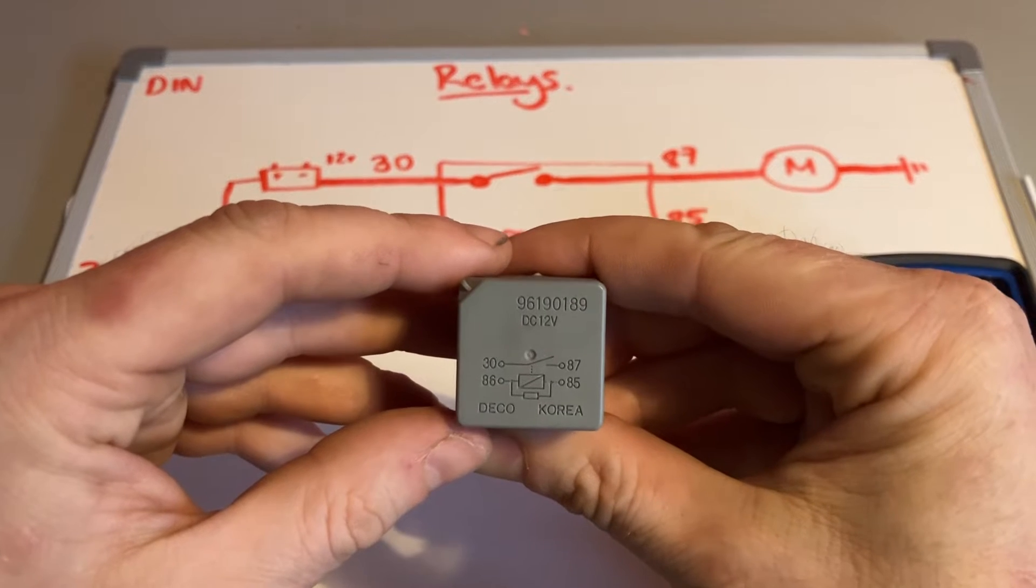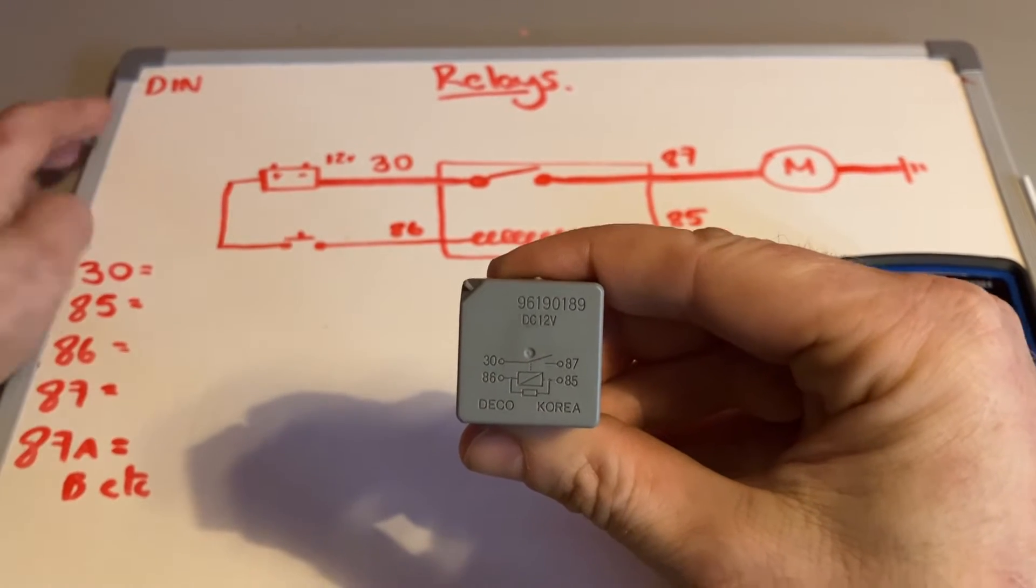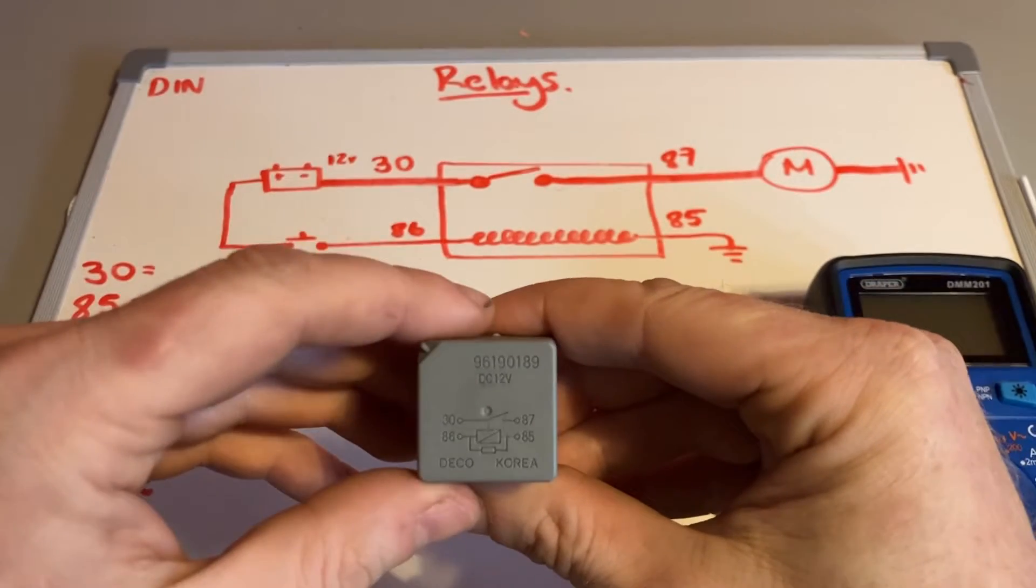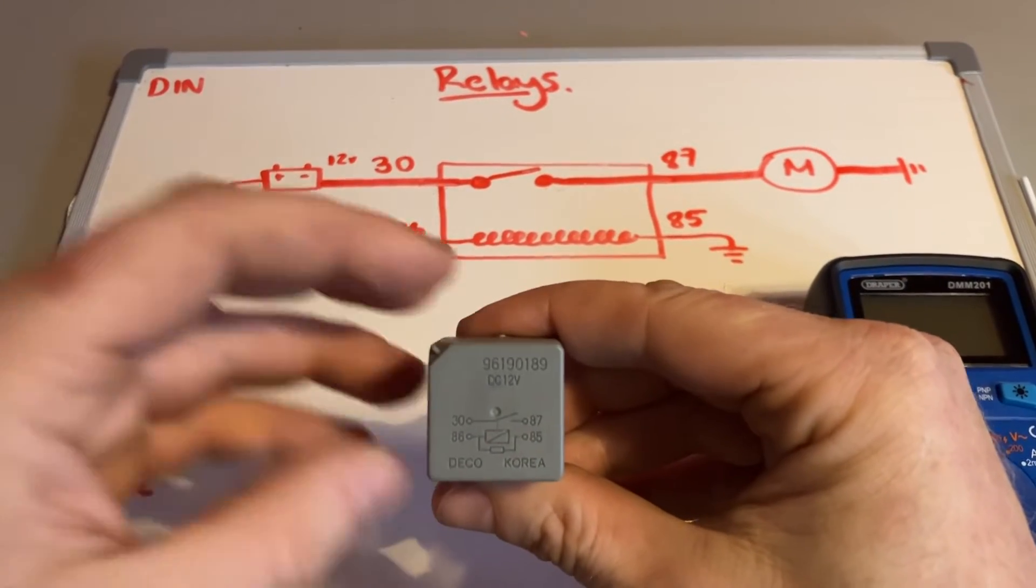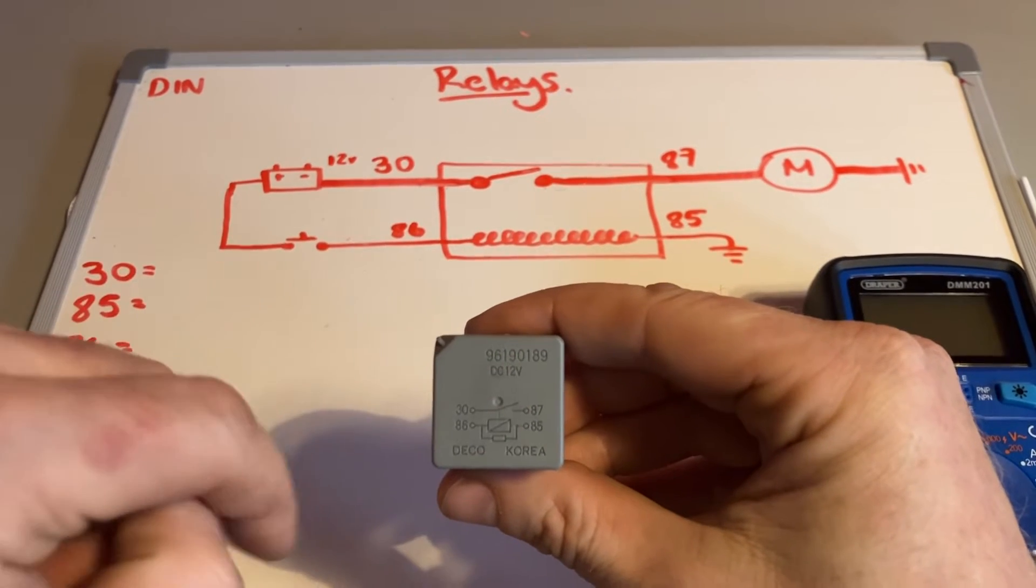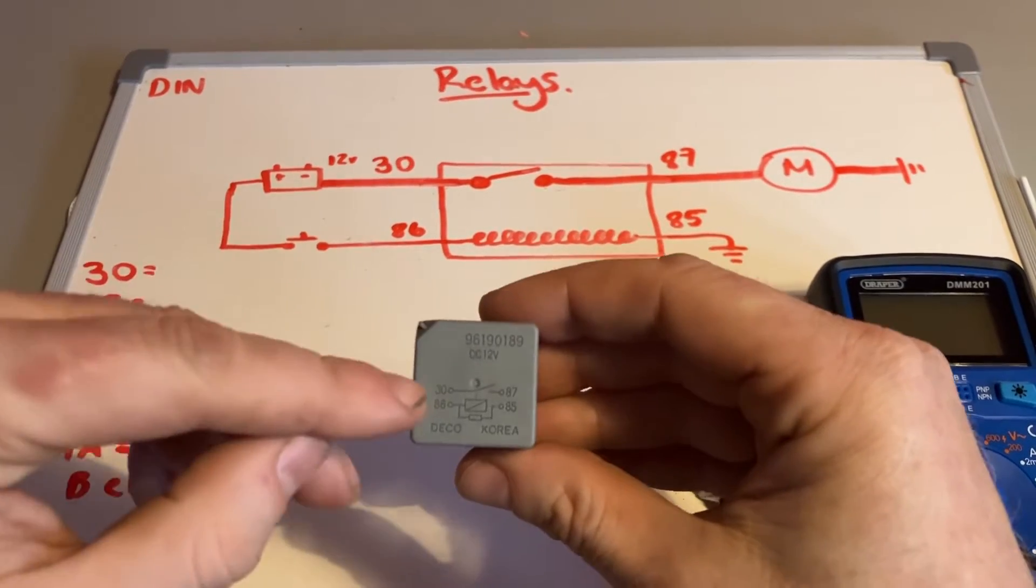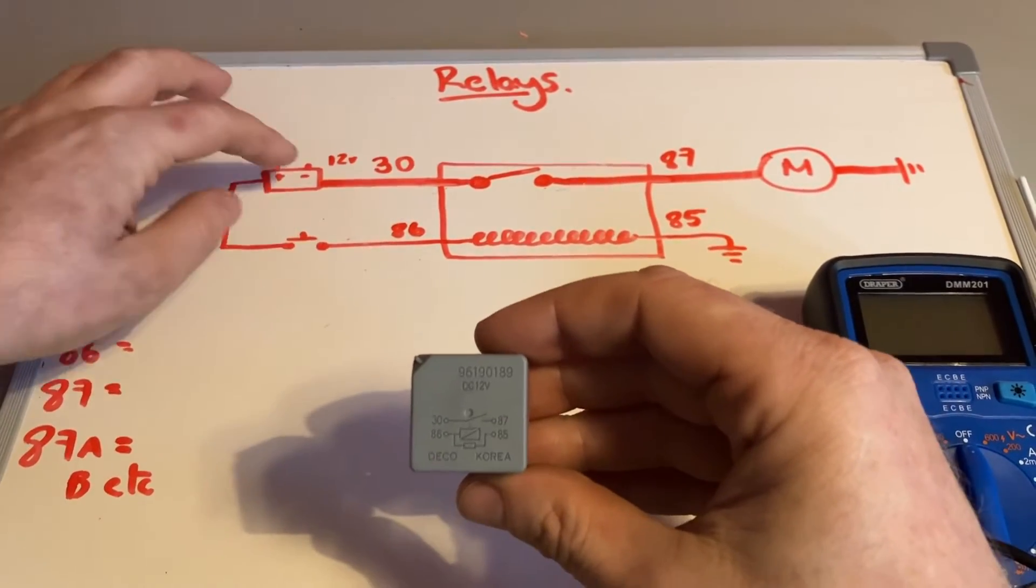So most relays are four or five pin. This one's a four pin, and normally it's stamped on there which each of those pins do. They use a German system called DIN numbers, which is basically the German Institute of Standards, but it's an international thing - all car companies use them. So these numbers are universal. So on a four pin relay, what you've got is a 30, which is on the way into the switch - so that would be 12 volts from the battery on pin 30.